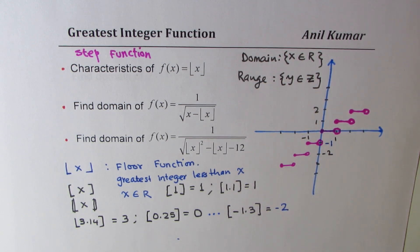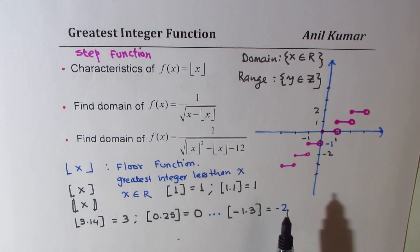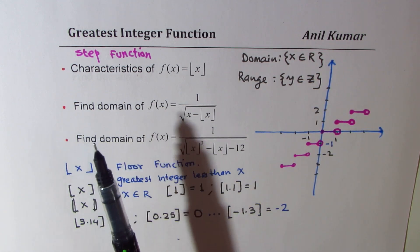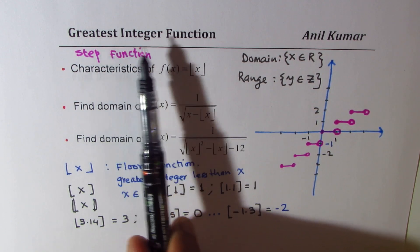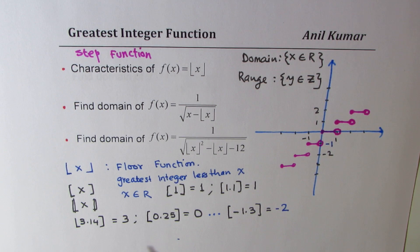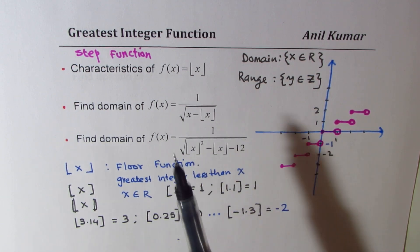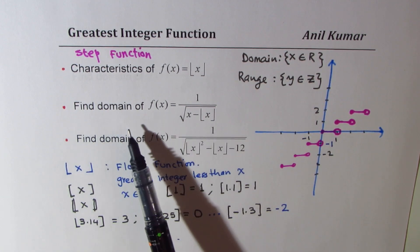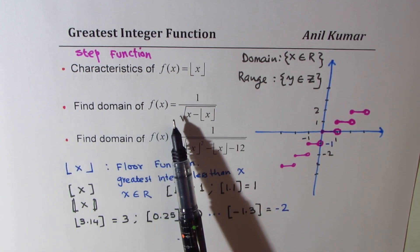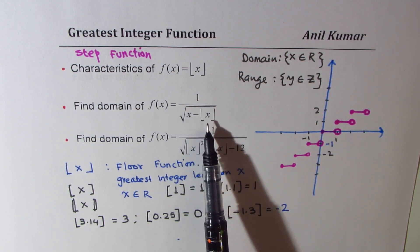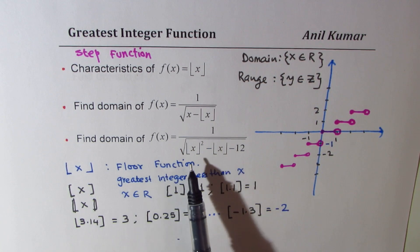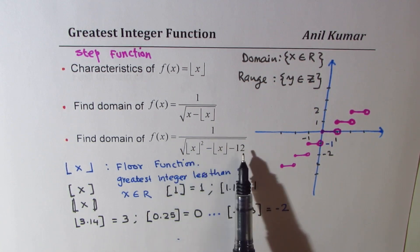Now let's find the domain of functions involving the greatest integer function. We look at how to find the domain of f(x) = 1 over the square root of x minus the greatest integer function of x, where there is also a quadratic form within the square root. You can pause the video and attempt this before looking at my solution.